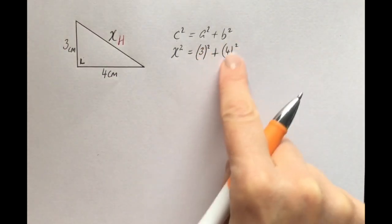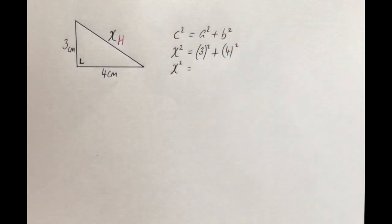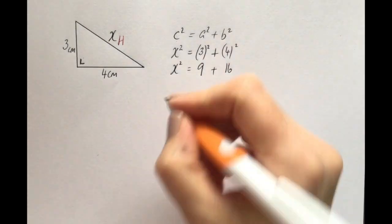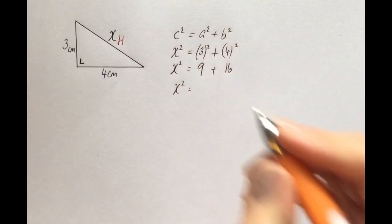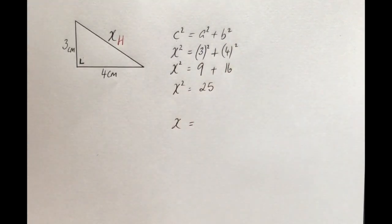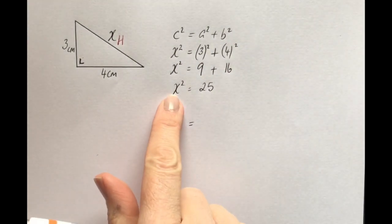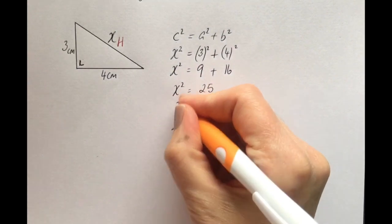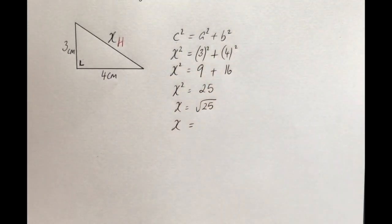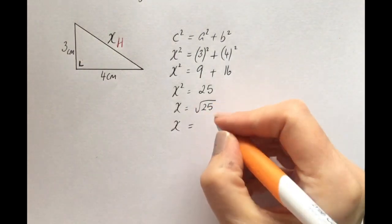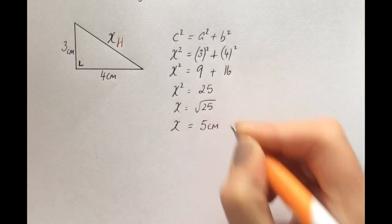In the next step, we can evaluate the right-hand side further. The left-hand side stays x squared. 3 squared is 9, and 4 squared is 16. Adding that together, 9 plus 16 is 25. Our aim is to get x on its own, so to undo the square — to go from x squared to x — we must square root. That gives us x is equal to the square root of 25, which works out nicely. The square root of 25 is 5 centimeters.